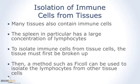Many tissues also contain some immune cells. For example, the spleen has a very large percentage of immune cells; however, other organs may contain immune cells as well. To begin isolation of immune cells from tissue, the tissue must first be broken up to separate the cells. This can be achieved either using a chemical method, such as collagenase, or a physical method, such as passing the cells through a filter. After the cells have been disrupted, a method such as Ficoll can be done to further isolate lymphocytes.